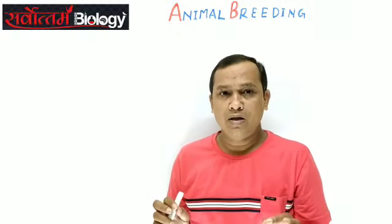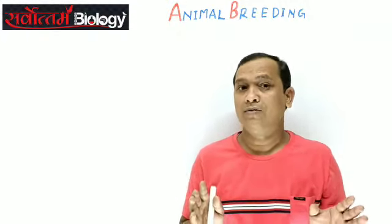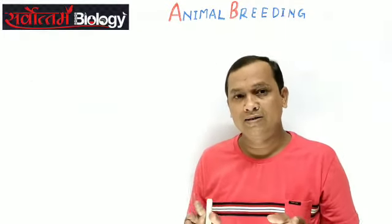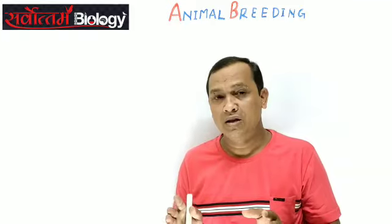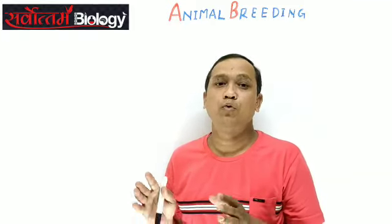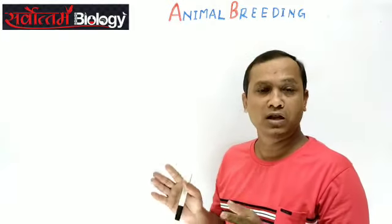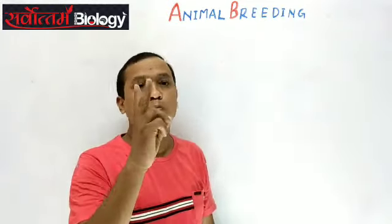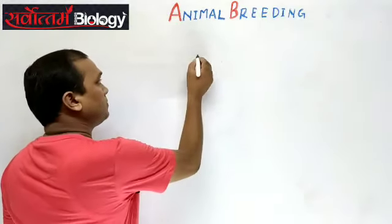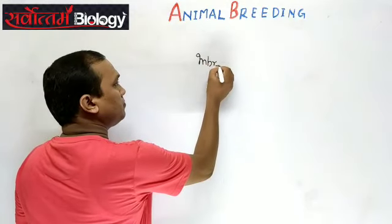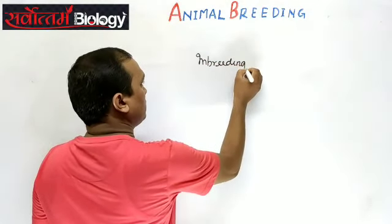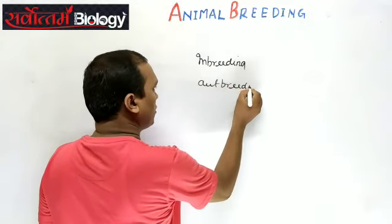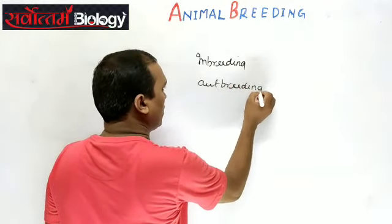Animal breeding is a process of artificial breeding between different animals to enhance the quality and quantity of the product obtained from the animals. Animal breeding is of two types: inbreeding and outbreeding.